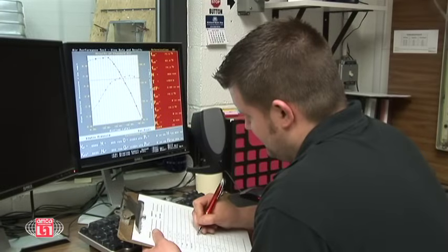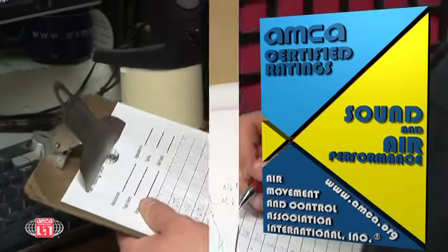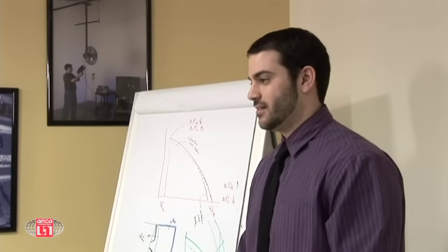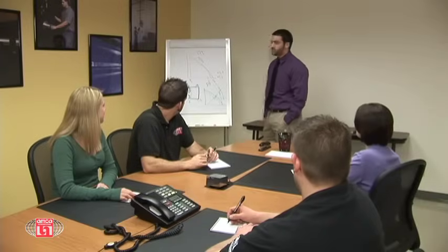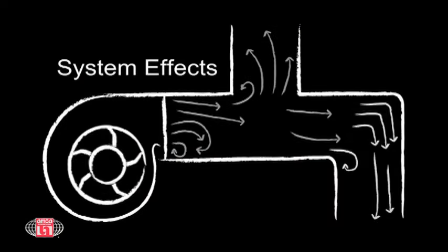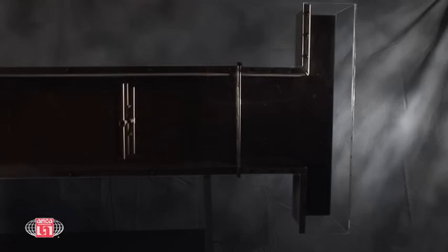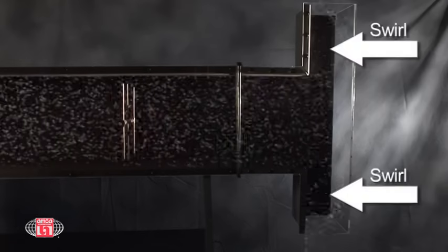Major elements of AMCA International are the Certified Ratings Program, Research and Testing, and education about HVAC equipment selection and installation, including system effects and its causes. System effects can be described as fan performance loss, the detrimental effect on fan air performance due to adverse flow conditions at both the fan inlet and the fan outlet.